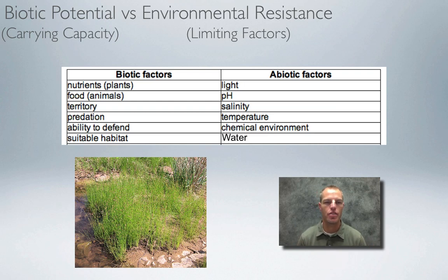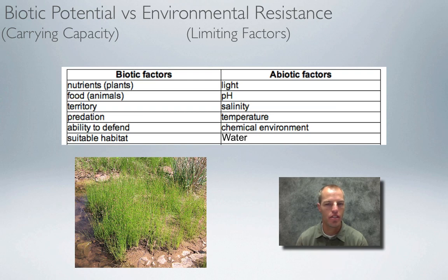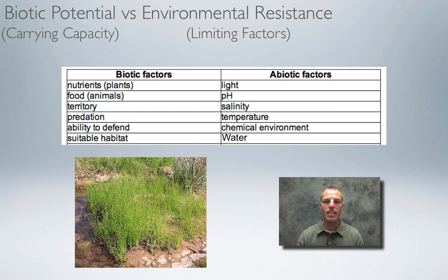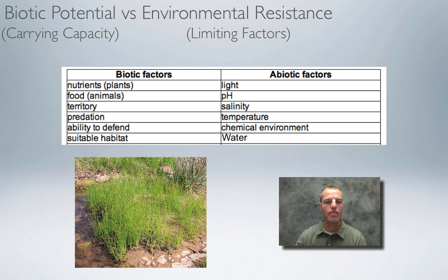If all those favorable factors are in place, the plant will grow exponentially and reach its biotic potential. But if environmental resistance occurs — for example, a temperature change making the region very hot, drying out the soil and reducing precipitation — those factors become limiting factors that prevent the organism from reaching its potential.